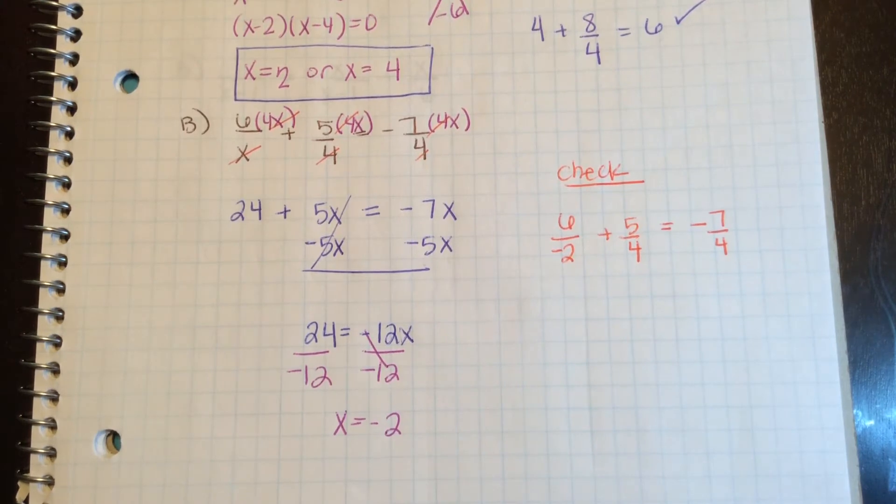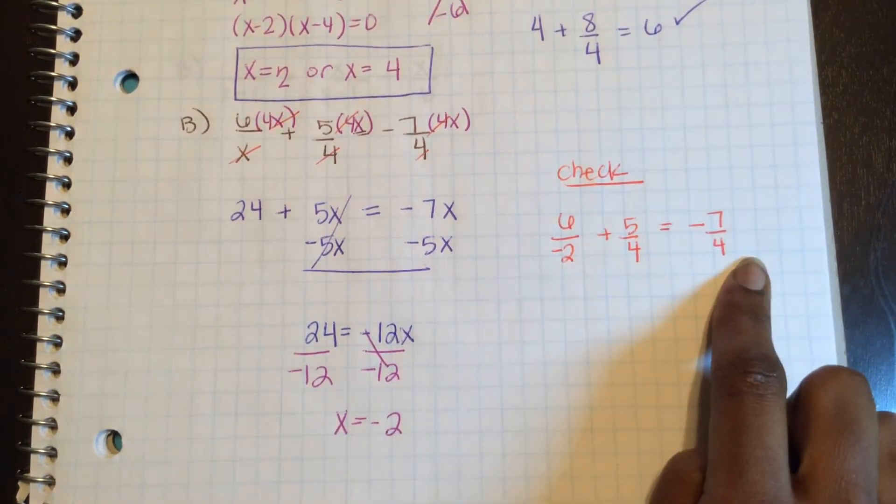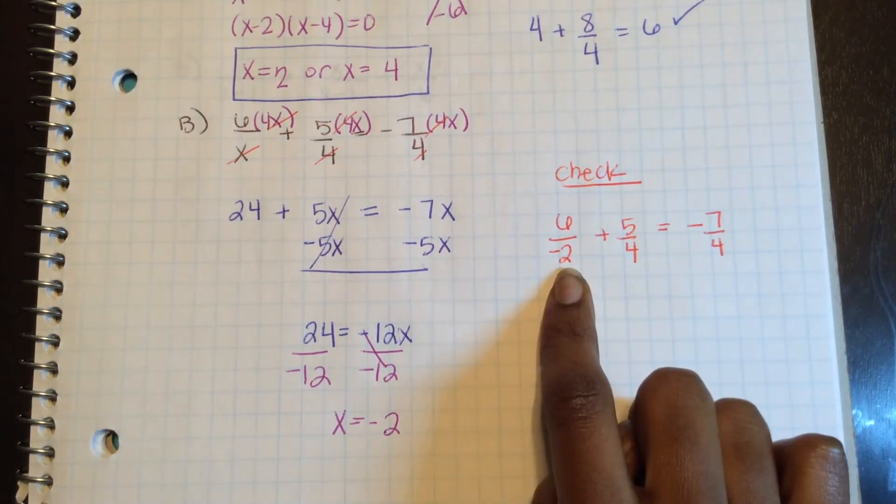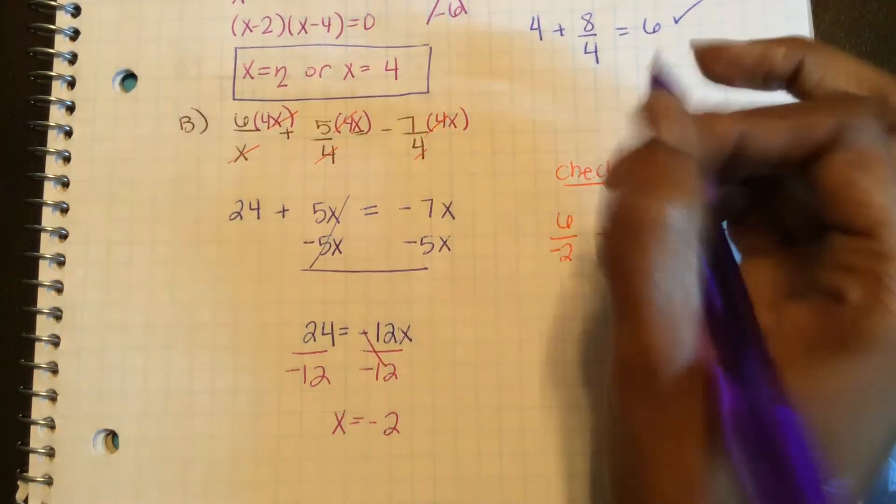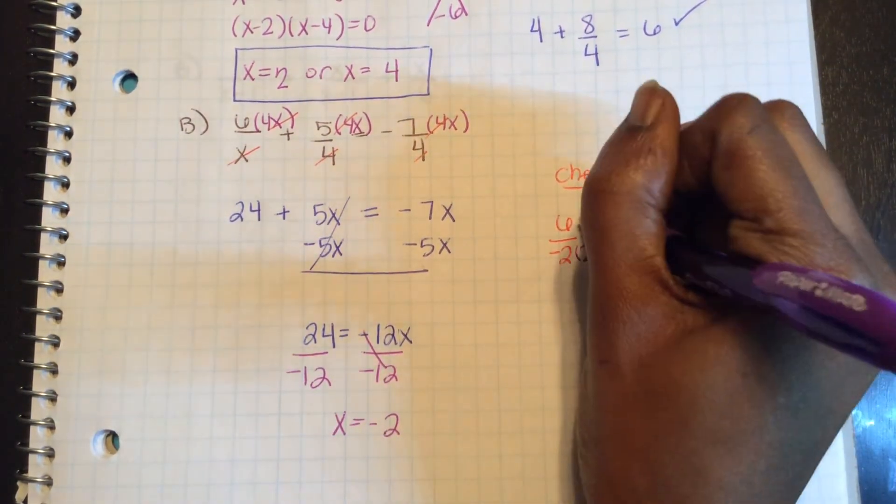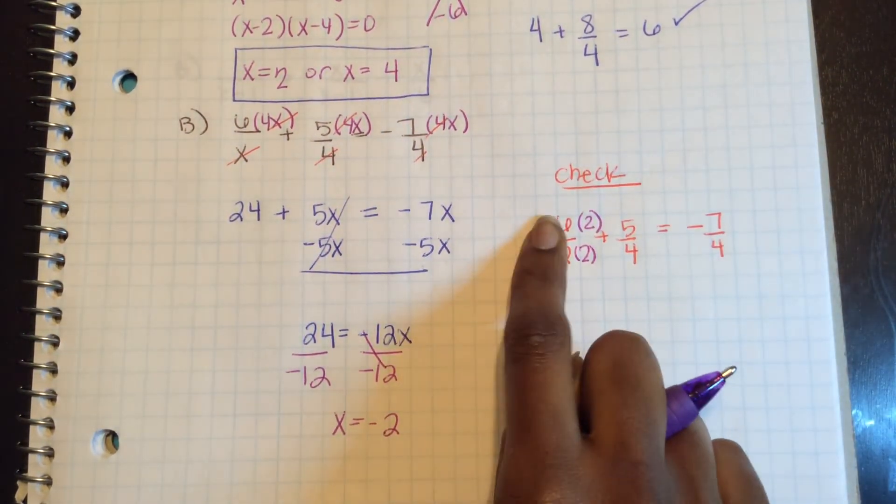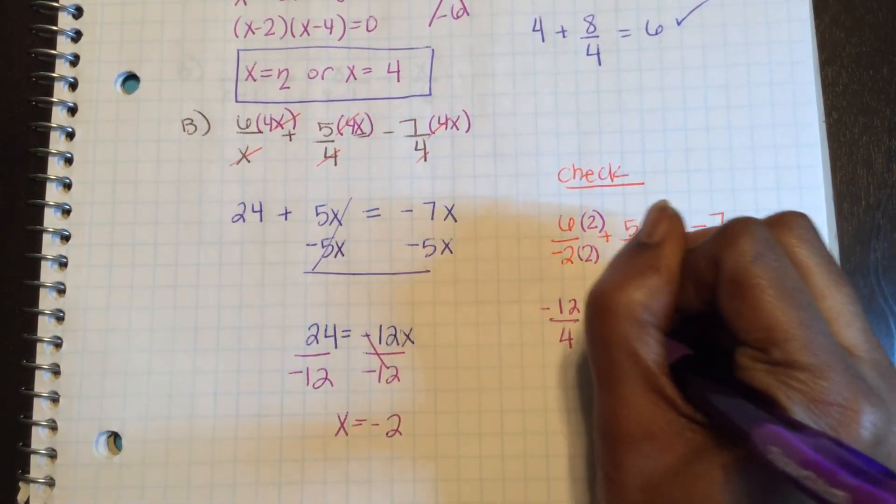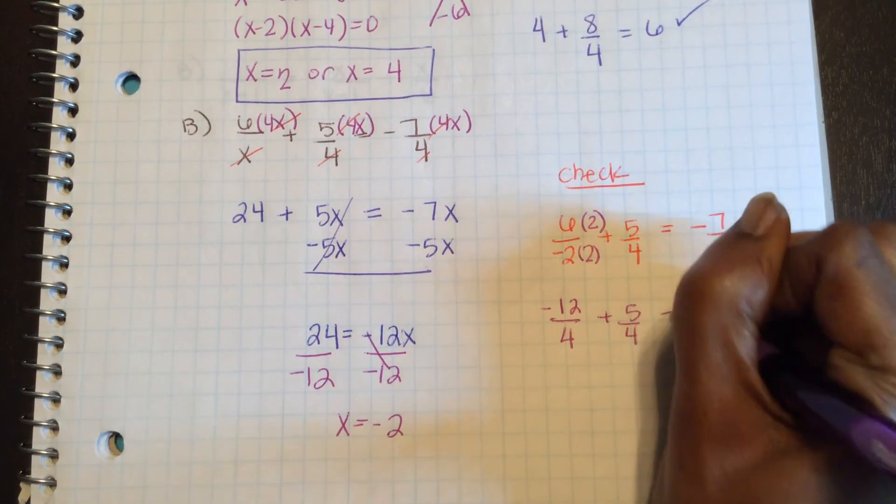First, I would need to make common denominators out of these 3, which is 4. I'm going to multiply this one times 2 times 2. The negative I'm going to move to the top. So this is negative 12 over 4 plus 5 over 4.